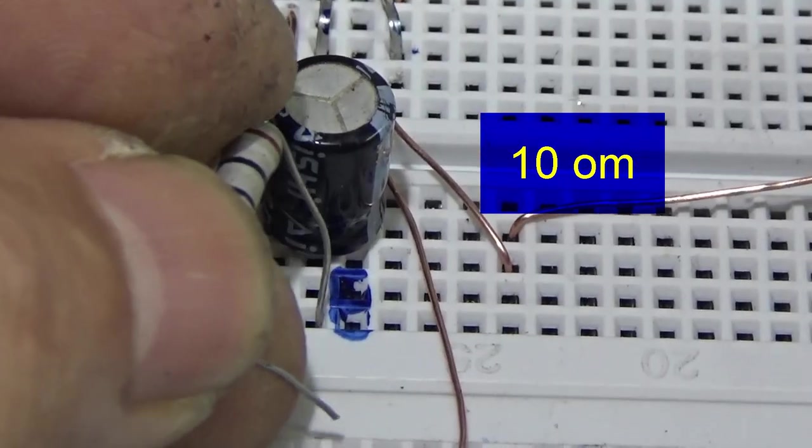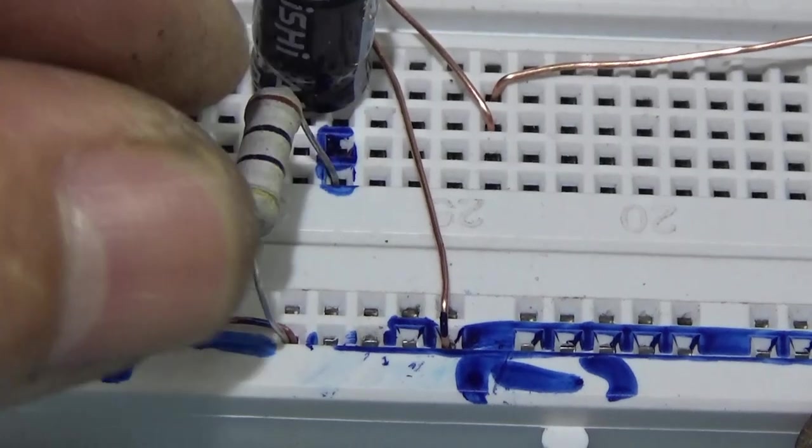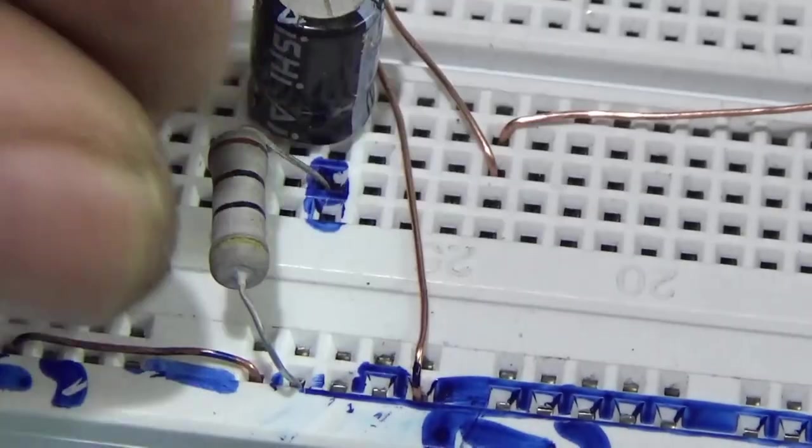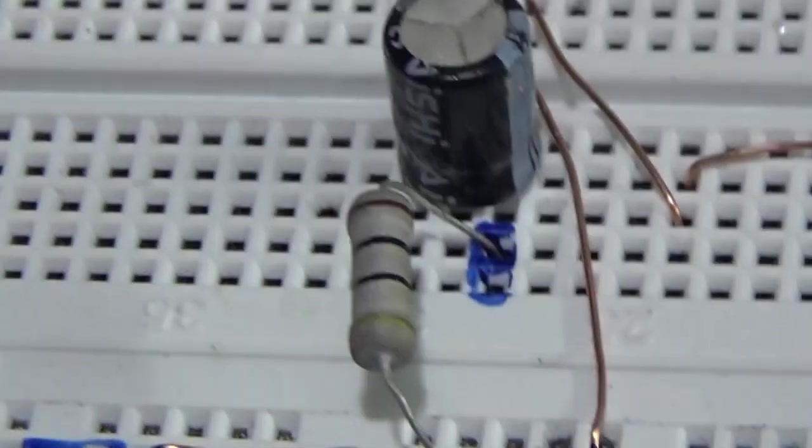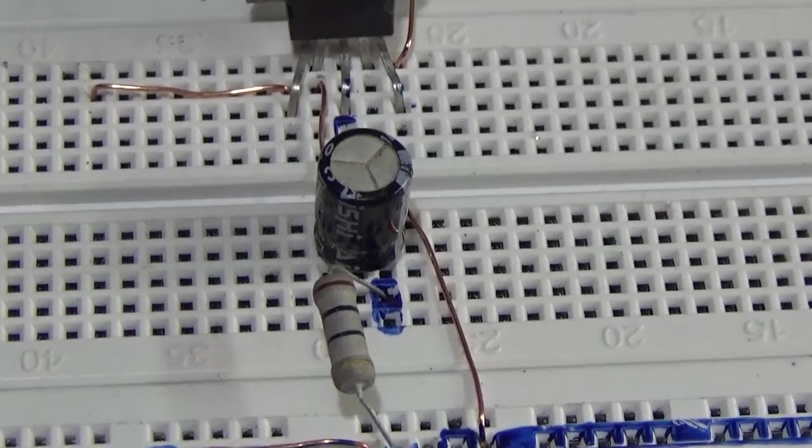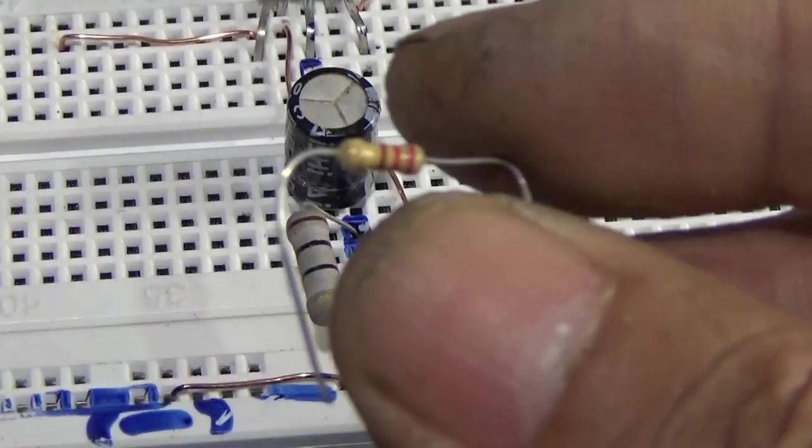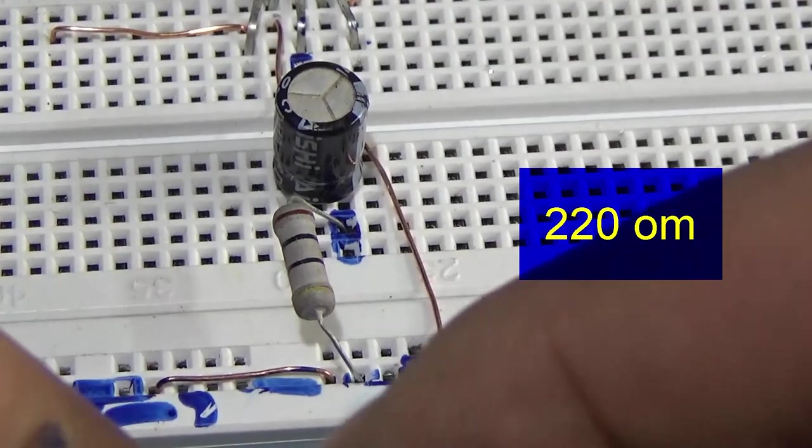Con điện trở này các bạn nên lấy cái loại 0.5 hoặc lấy cái loại 1 watt. Nếu như cảm thấy nó nóng thì lấy cái loại 1 watt. Mà nếu không nóng thì lấy 0.5 watt thôi, không cần lấy con trở bình thường thôi.